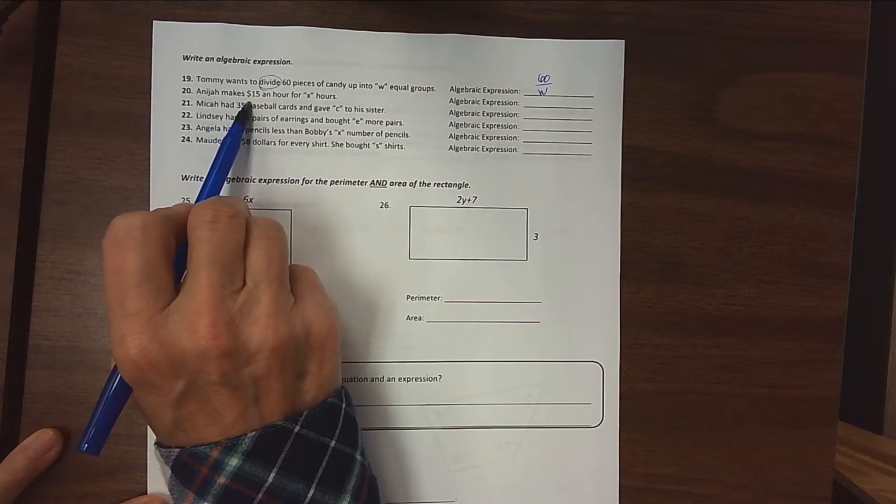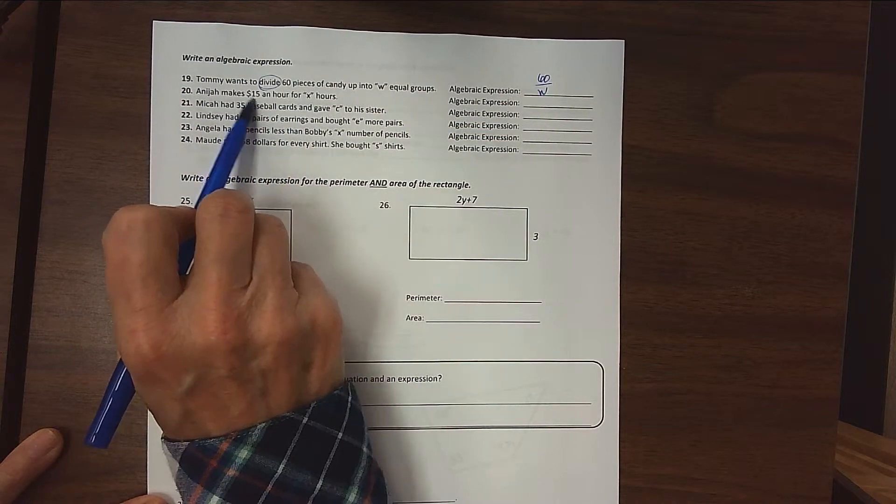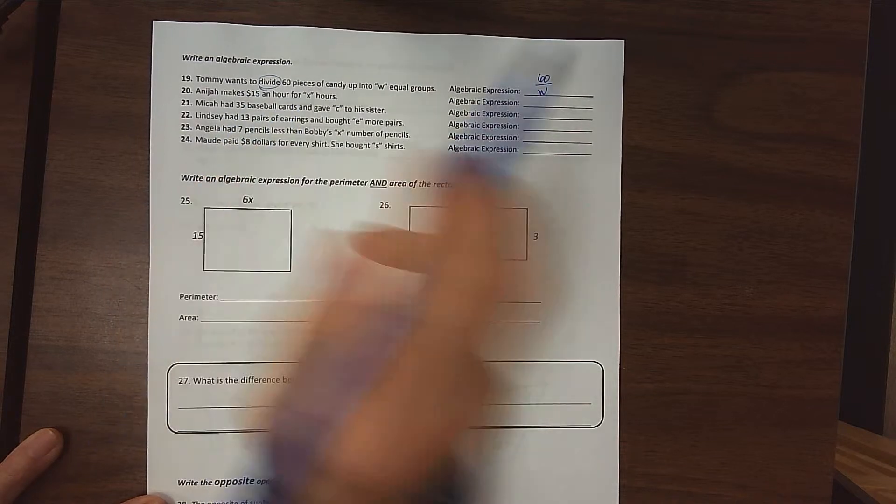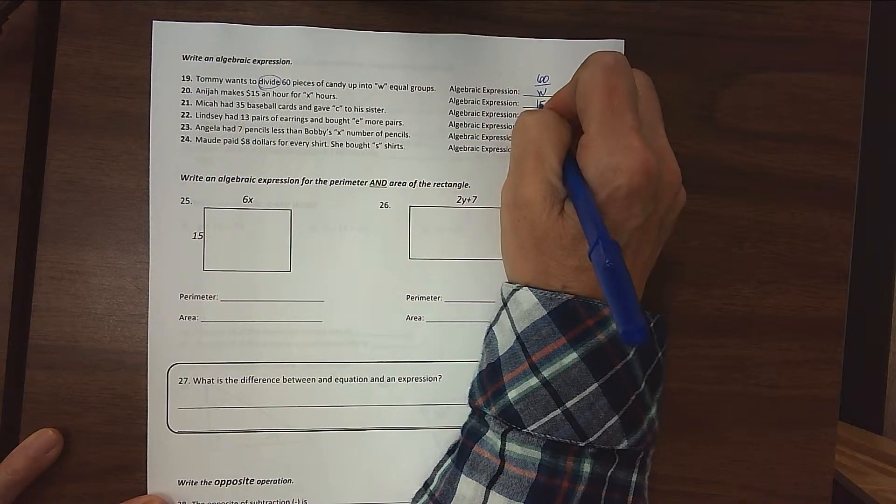Anija makes $15 an hour for X hours. $15 every hour for X hours, that would be 15X.